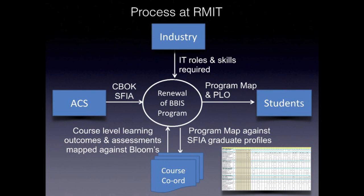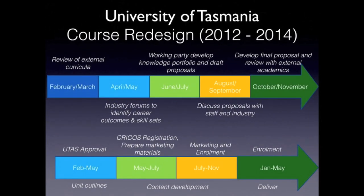How has this been used in practice? At RMIT and many other institutions, the ICT curriculum has been mapped to SFIA, Bloom's, and CBOK based on the needs of industry and considering authentic means to assess the skills required for the intended career roles. Similarly, at institutions like the University of Tasmania, SFIA and CBOK has been used as the basis of a significant course redesign as part of their curriculum renewal process.